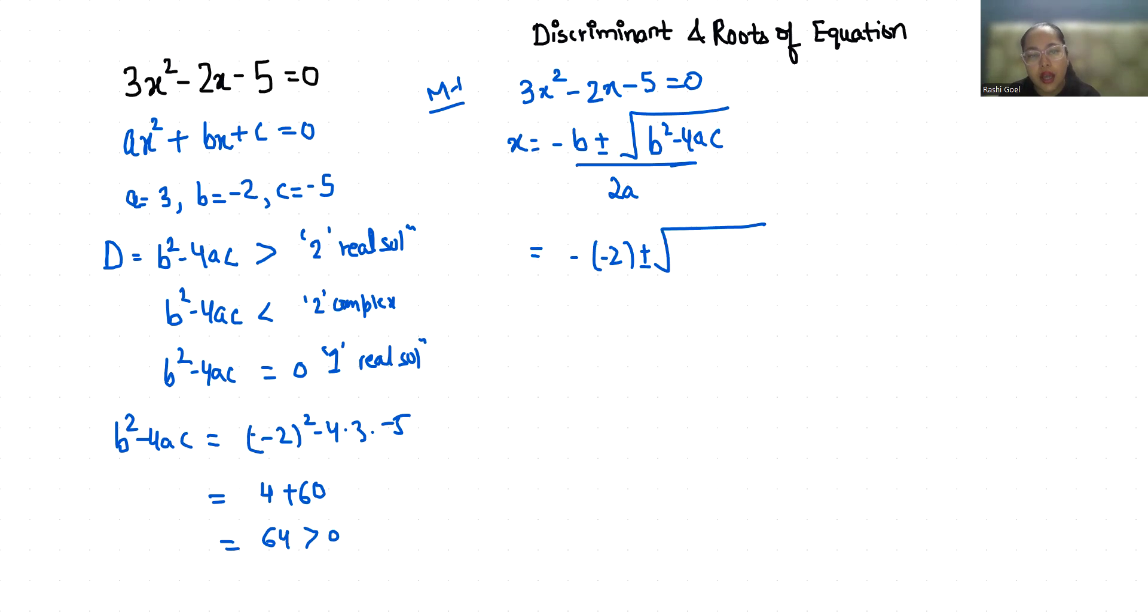So minus minus 2 plus minus square root of b squared minus 4ac, we already calculated this is 64. So 2 plus minus root 64 is 8, all over 6. First case: 2 plus 8 by 6, and second case: 2 minus 8 by 6.